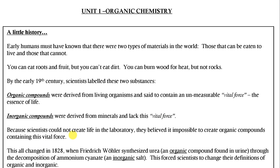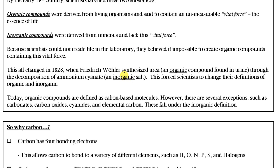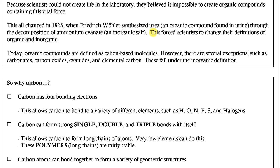Because scientists could not create life in the laboratory, they believed it was impossible to create organic compounds containing this life force. That is until 1828, when Friedrich Wöhler accidentally synthesized urea — an organic compound found in urine — through the decomposition of ammonium cyanate, an inorganic salt. The way that Wöhler synthesized urea without the aid of a kidney, without using an organism, was huge and broke down the barrier between organic and inorganic chemistry.